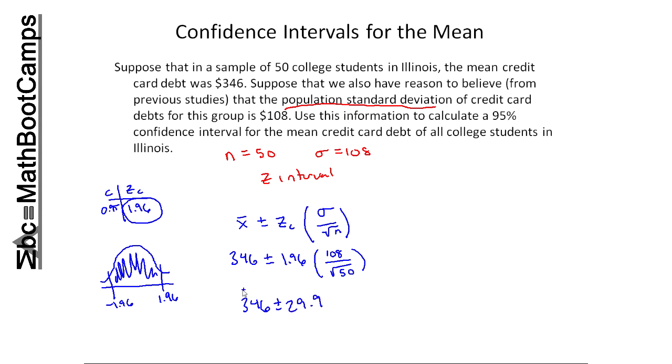In some cases, you'll actually label this as your confidence interval. You'll put dollar signs here because this is supposed to represent debt, and that'll be your final answer. There is another way to write out this interval, and it's to actually do these operations. So I'll get two endpoints. I take 346 minus 29.9 and 346 plus 29.9, and I'll end up with two values that are essentially the endpoints of my confidence interval. When I add it, I get 375.9, and when I subtract it, I get 316.1.